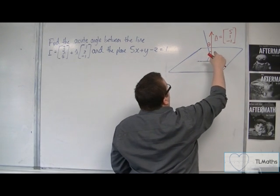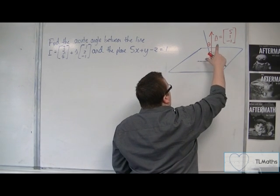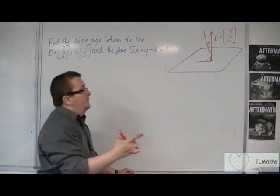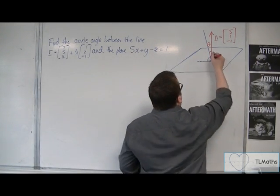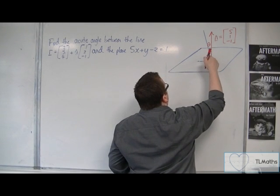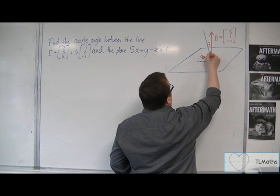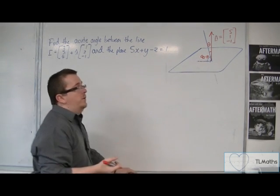That's not the angle that I'm actually looking for. I'm looking for the angle between the line and the plane. But because I know that the angle between the normal vector and the plane is a right angle.